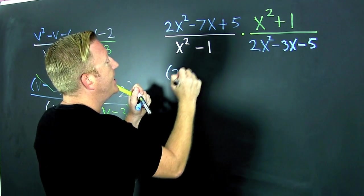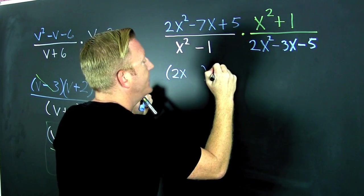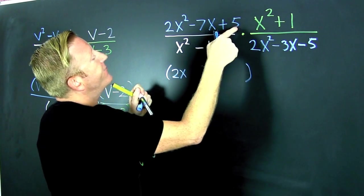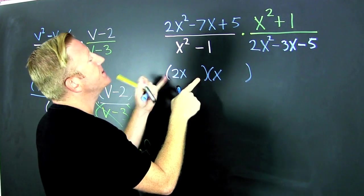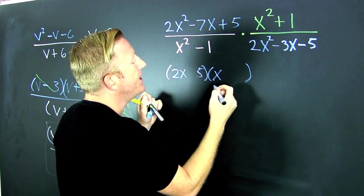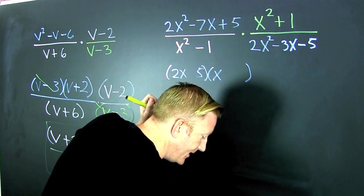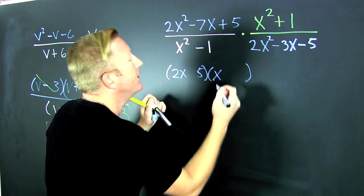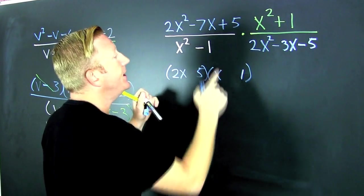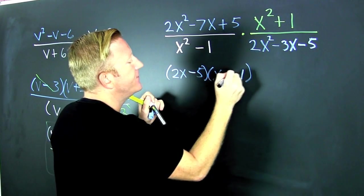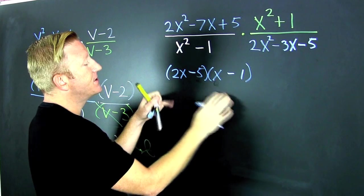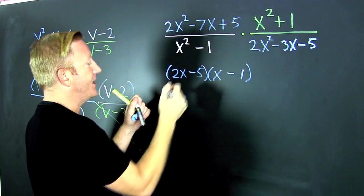There's a 2 there and an X there. Now that 5 needs to go in here because I'm going to need to add those factors to be a minus 7. So that's a 5 there, and then that's a 1 there because 5 times 1 is 5. The signs are the same and they're both negative. Let's check it — minus 5X minus 2X is a minus 7X.